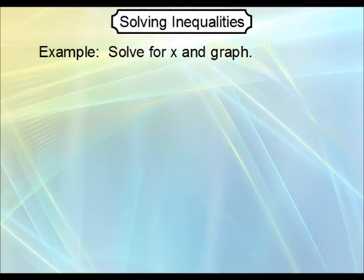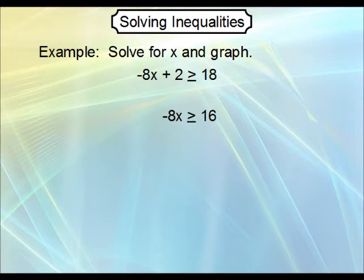Now let's solve some inequalities. Say you're going to solve this inequality. Well, obviously the strategy is to isolate the x variable. So what we'll do is we'll subtract 2 from both sides of the inequality. And that leaves us with this. And then we finish up by dividing negative 8. Recall that dividing by a negative, or multiplying by a negative, causes the arrow to change direction. So our solution is x is less than or equal to negative 2.